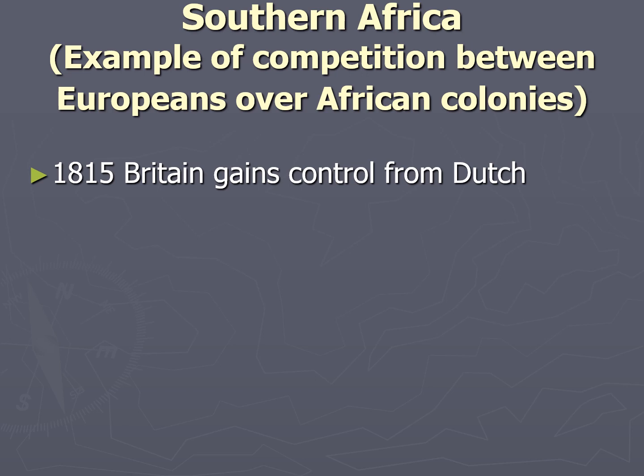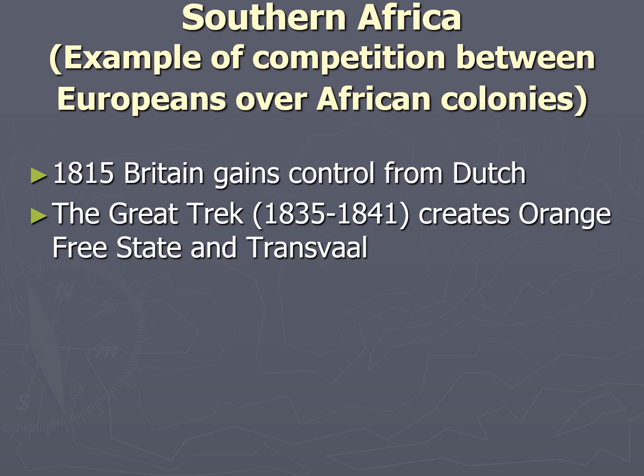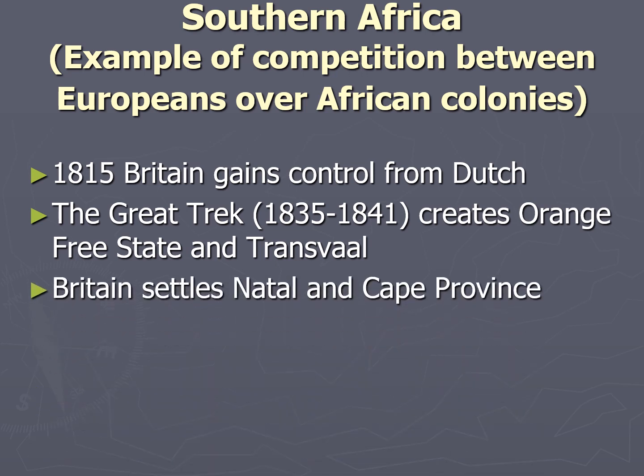In the early 1800s, the British arrived and gained control from the Dutch. Between 1835 and 1841, the Boers, not wanting to live as British subjects, moved more inland on what is known as the Great Trek. They formed two colonies: the Orange Free State and the Transvaal. The British stuck to the coast and named their colonies Natal and Cape Province. Mostly the four colonies lived peacefully with each other until the late 1800s, when gold was discovered in the Transvaal, sparking a series of wars known as the Boer Wars, the last between 1899 and 1902.